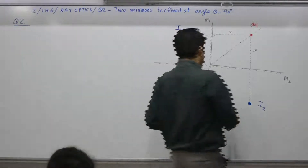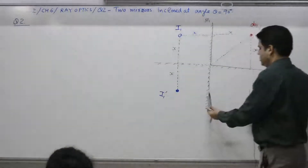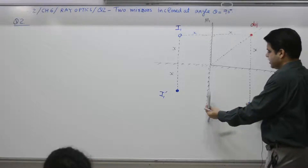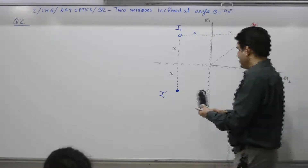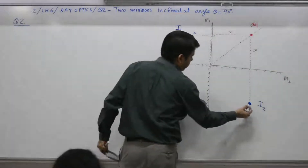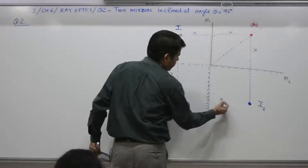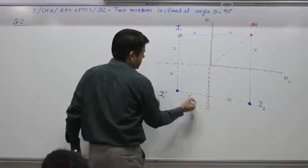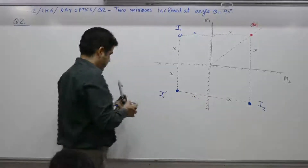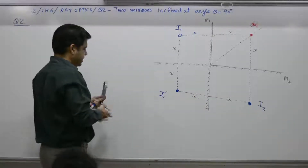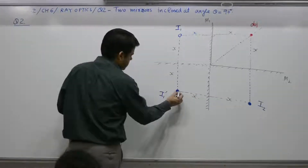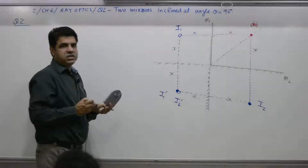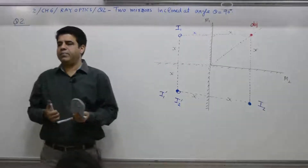Similarly, I2 acts as an object in front of mirror M1. This distance is x and the image distance is also x, so the image of I2 is I2-dash. These two images I1-dash and I2-dash overlap at the same point.